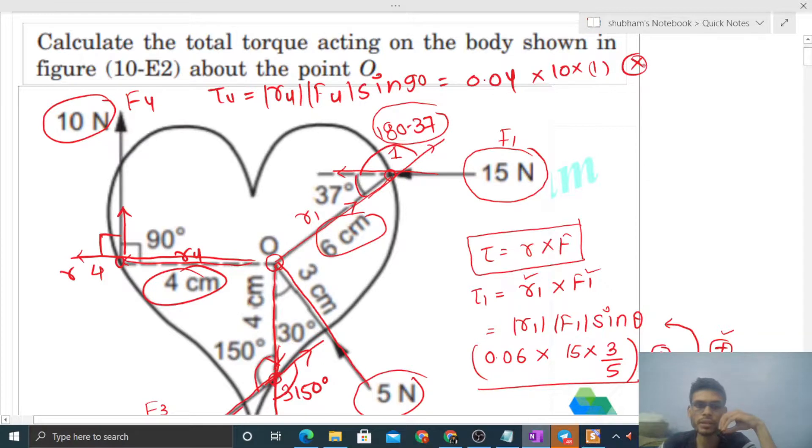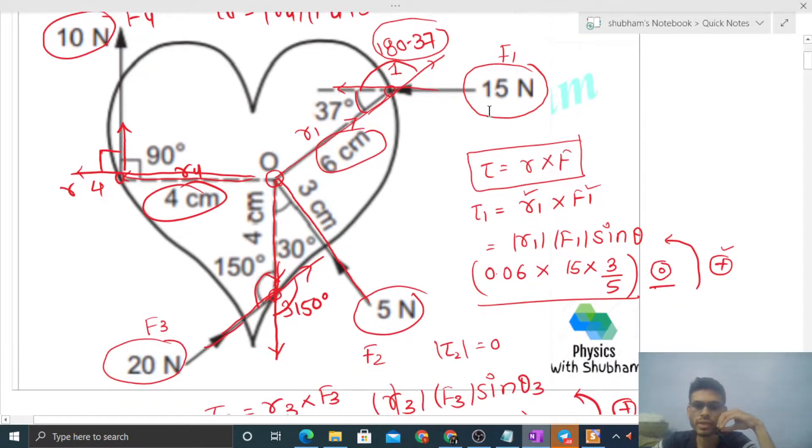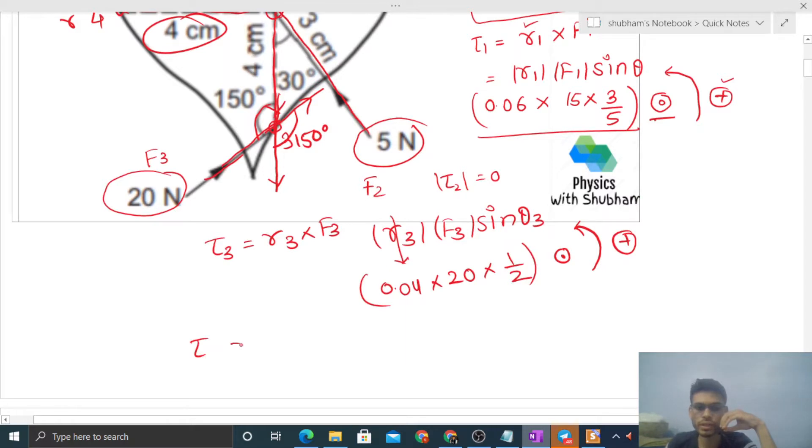Or you can say clockwise, and you can say negative. So net torque, that is the total torque, is equal to torque 1 plus torque 2 plus torque 3 plus torque 4.